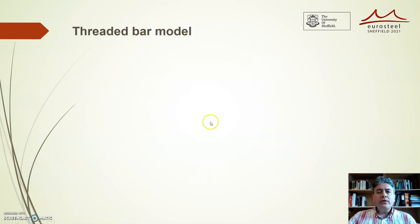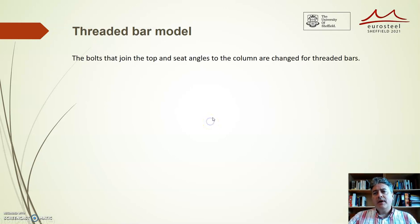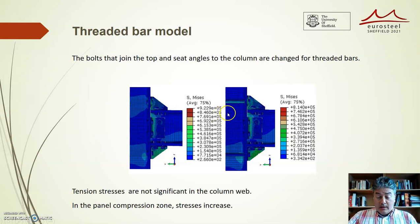The threaded bar model was created by changing the bolts for threaded bars in the previous model. The figures show the von Mises stress in the base model and in the threaded bar model. As you can see, tension stresses are not significant in the panel tension zone, but in the panel compression zone stresses increase.